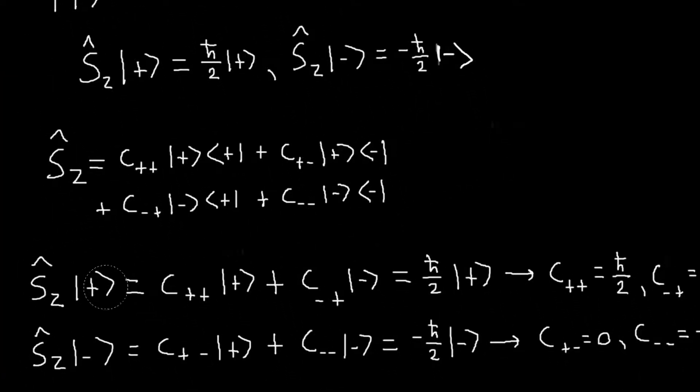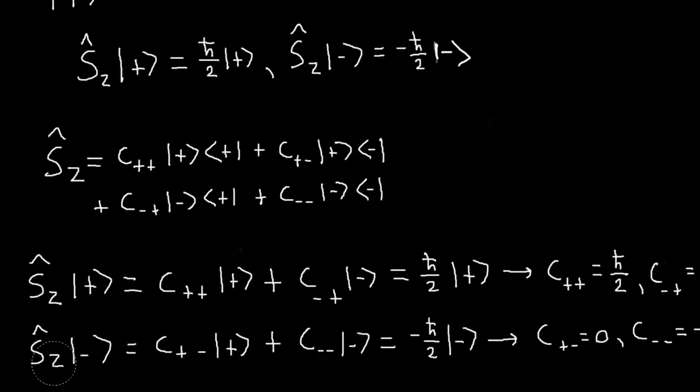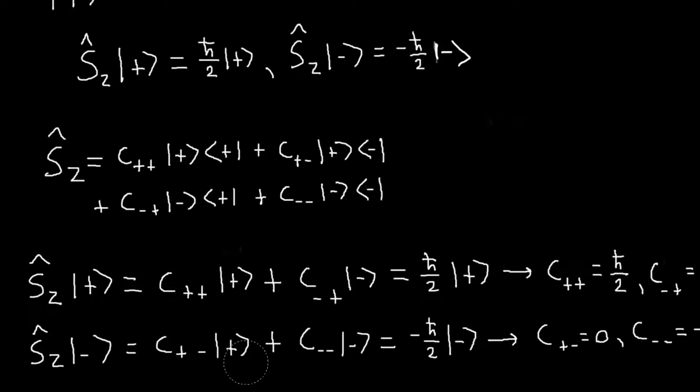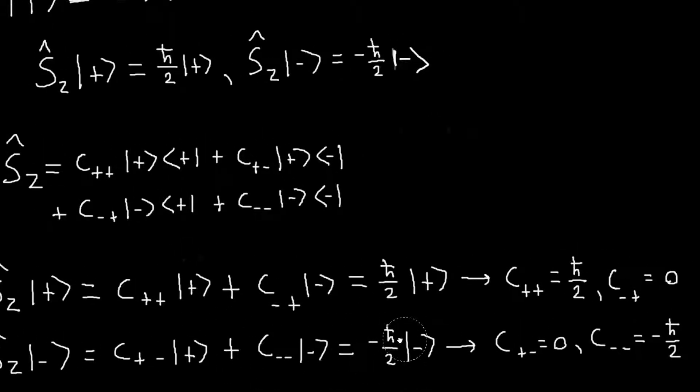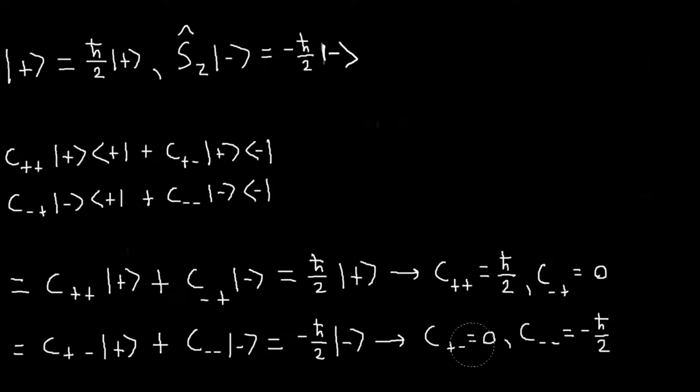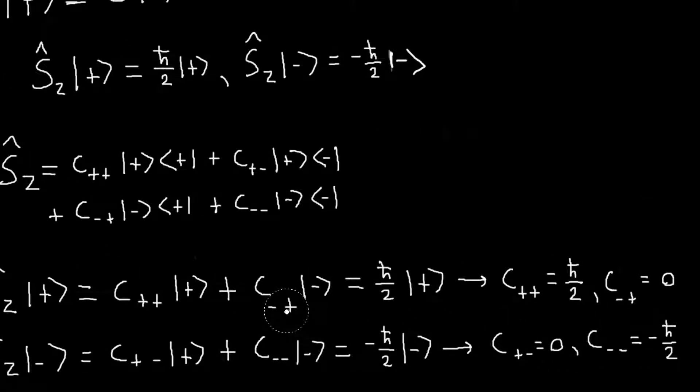And in a similar way, we can act Sz on minus, on the minus ket. We get these terms, and again, to satisfy these relations, we would need C plus minus to be zero and C minus minus to be negative h-bar over two.